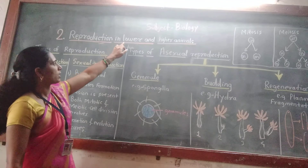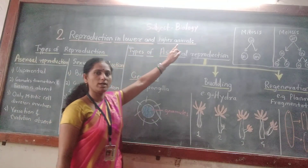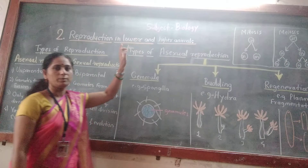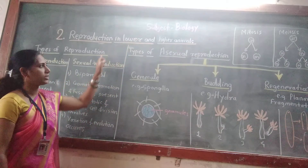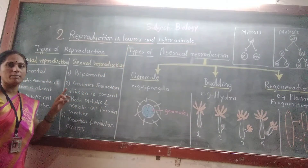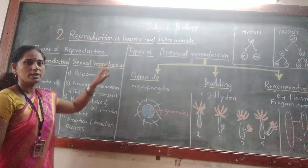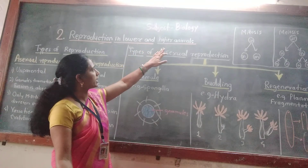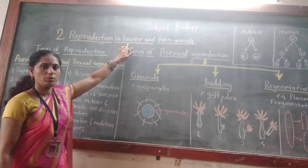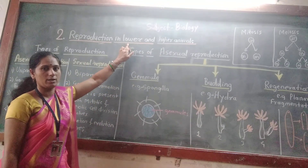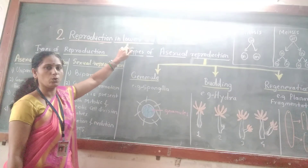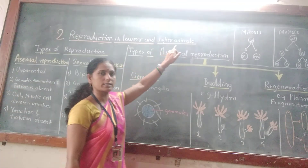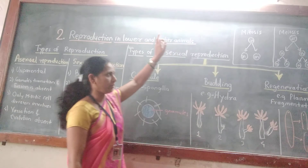Which are lower animals and which are higher animals? We have studied animal classification in the previous standard — that is, kingdom Animalia divides into 10 phyla. Out of these 10 phyla, lower phyla are included in lower animals and higher phyla are included in higher animals.